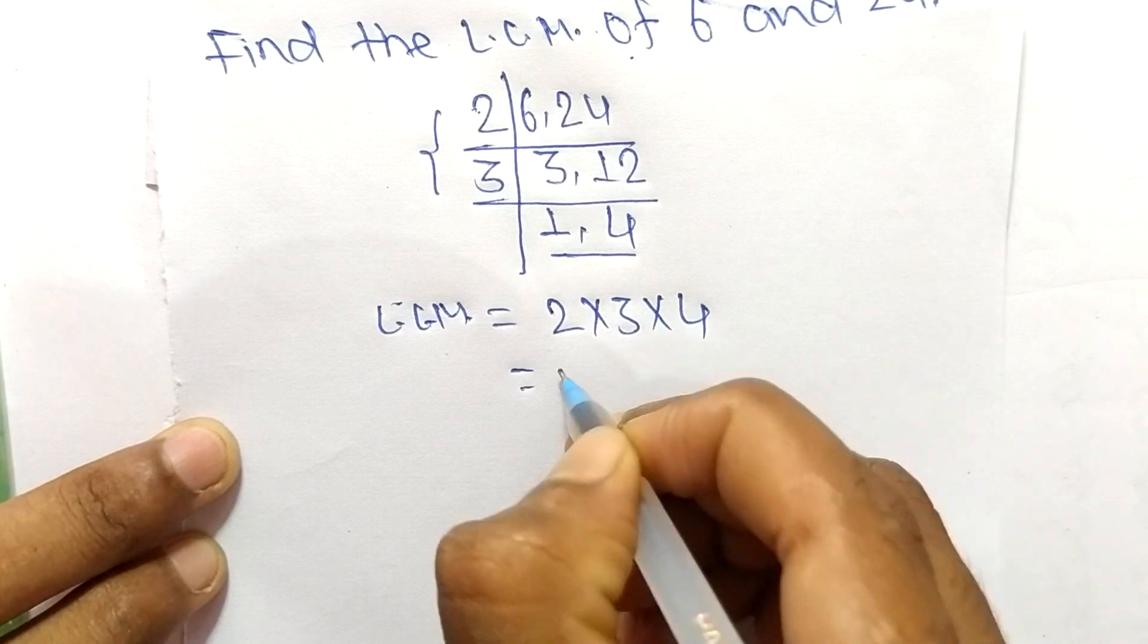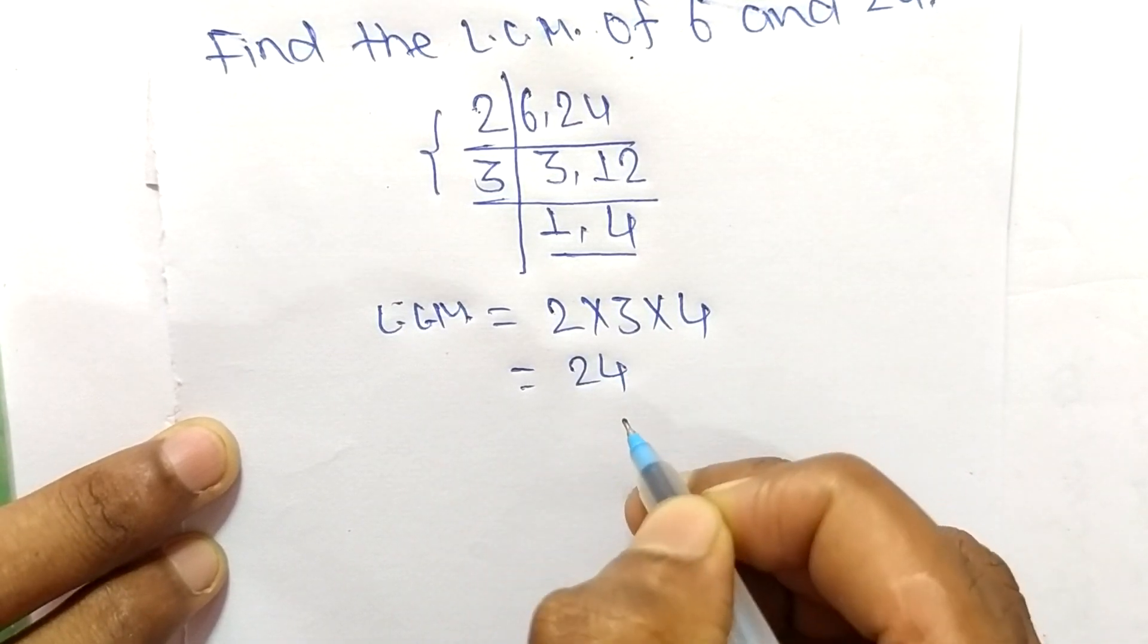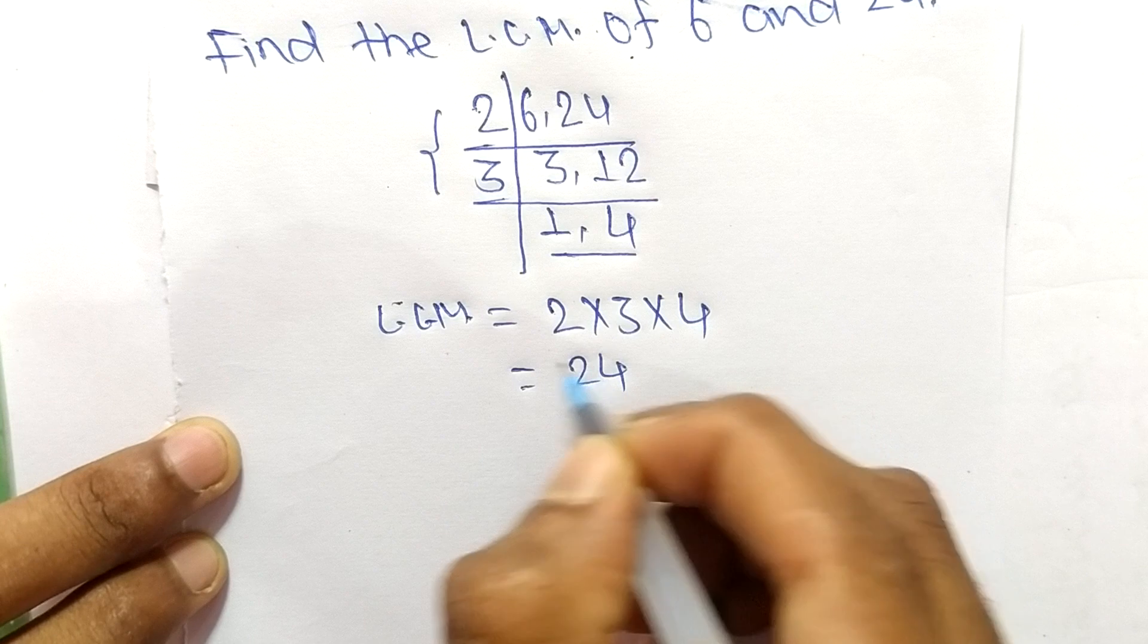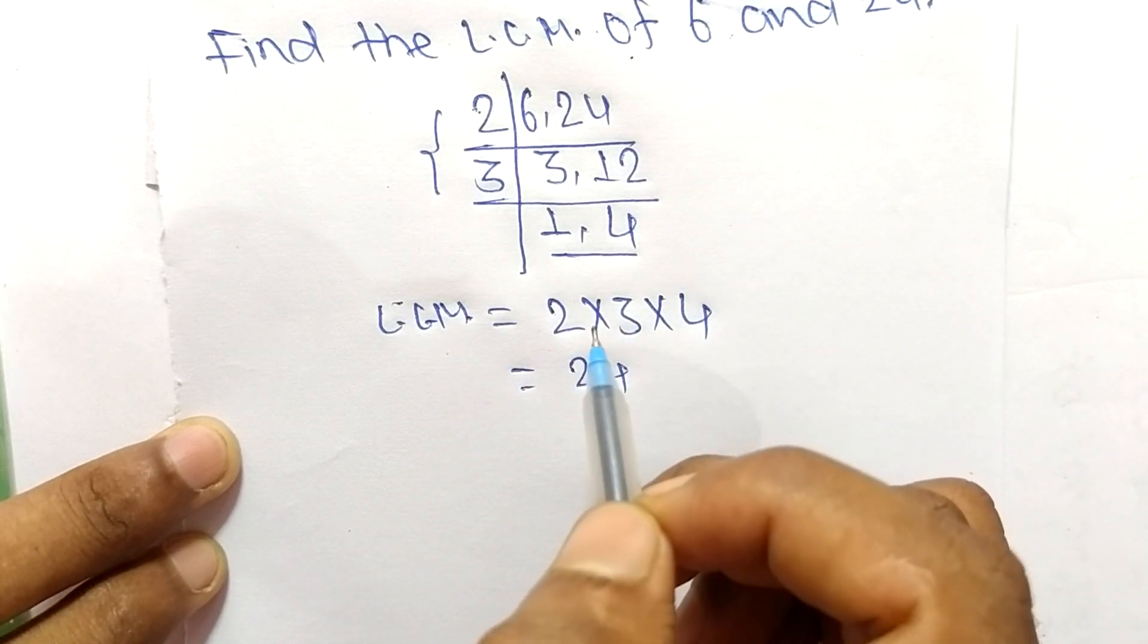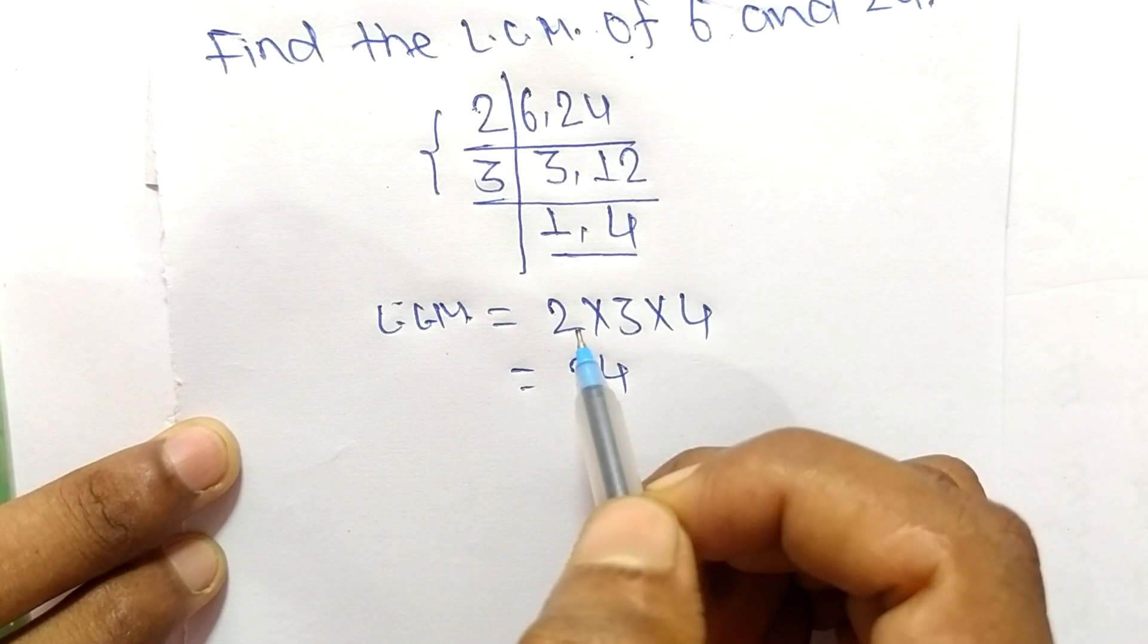Multiplying these, we get 2 times 3 equals 6, and 6 times 4 equals 24. So 24 is the LCM of 6 and 24. This much for today, and thanks for watching.